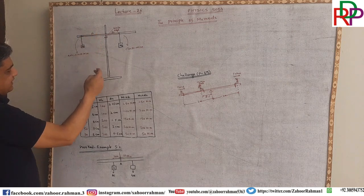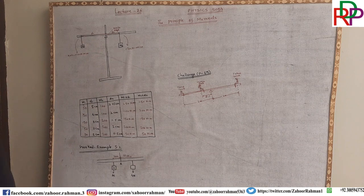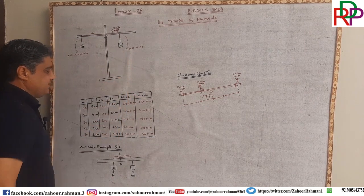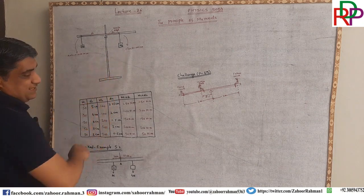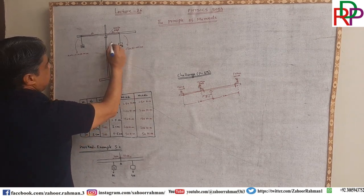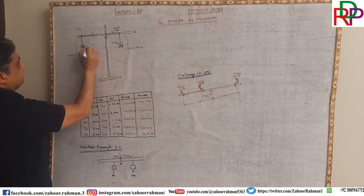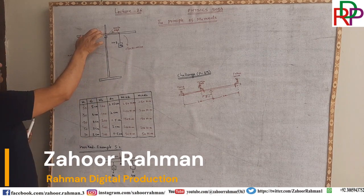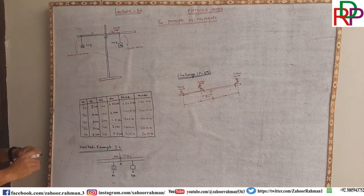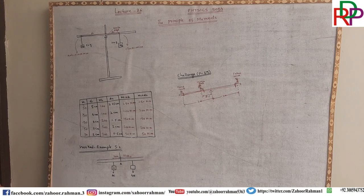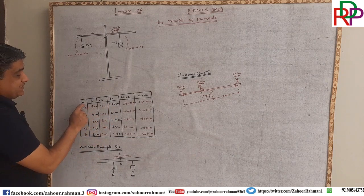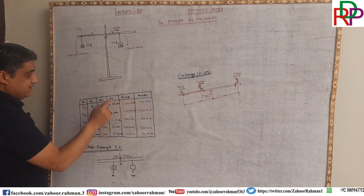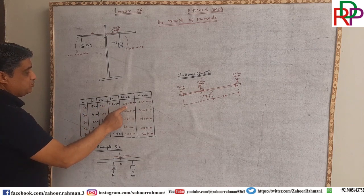For the first set, we are taking D1 as 5 centimeters. W02 is 100 grams and W01 is 50 grams. D2 is taken as 2.25 centimeters when the ruler is balanced. When we multiply W01 by D1, we get 50 multiplied by 5, which equals 250. And 2.25 multiplied by 100 also yields 250. So both moments are equal.